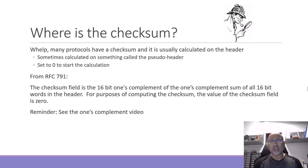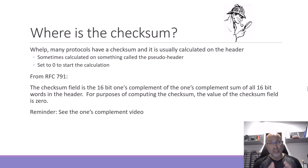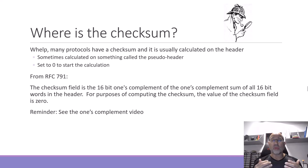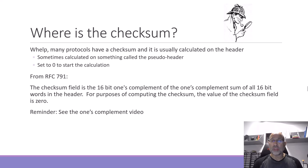RFC 791, the Internet Protocol, defines the checksum as the 16-bit ones complement of the ones complement sum of all the 16-bit words in the header. We're using the complement and doing the ones complement sum. If you forgot how to do the ones complement, there's another video on that — take a peek.